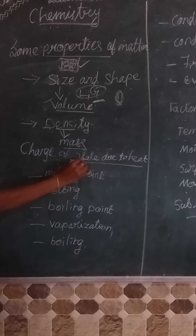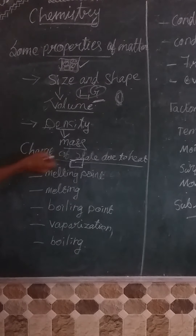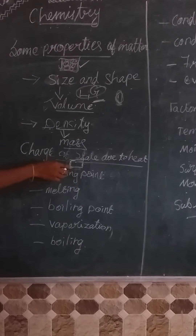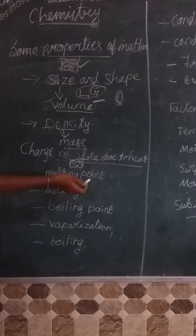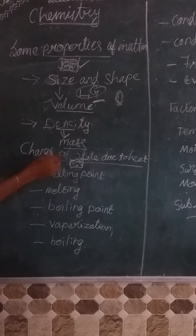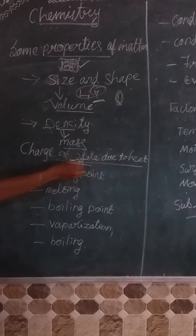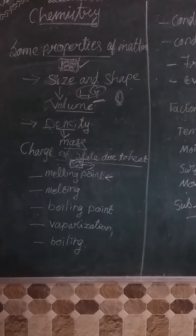When we are taking a solid — let's take this as an ice cube — when a solid is supplied heat, the kinetic energy of its particles starts to increase and hence the temperature of the solid starts to rise. At one particular temperature it will start to melt. That is called the melting point.